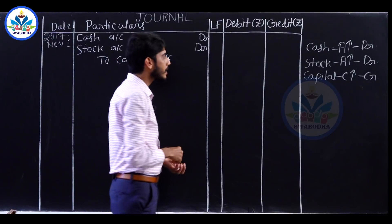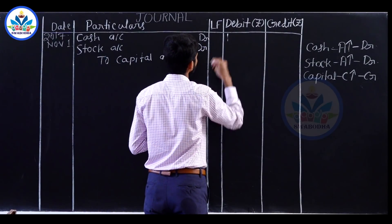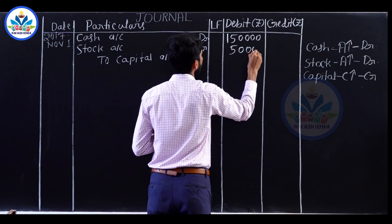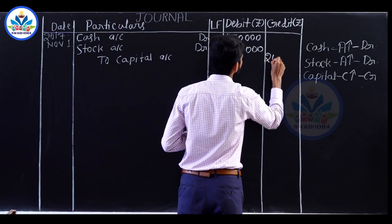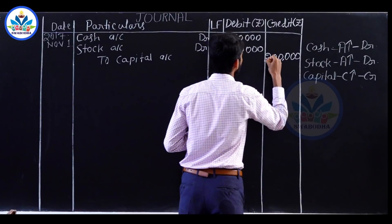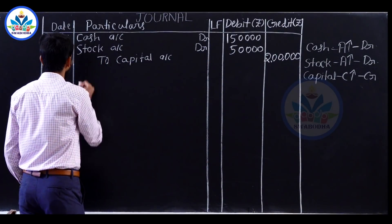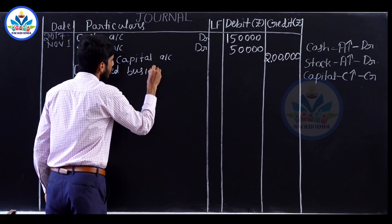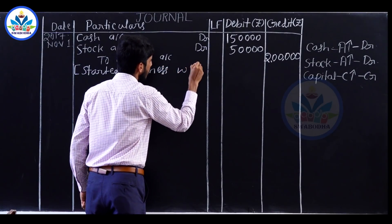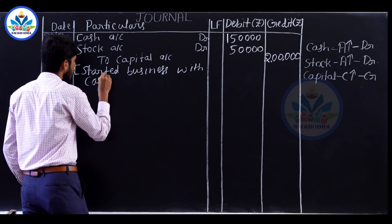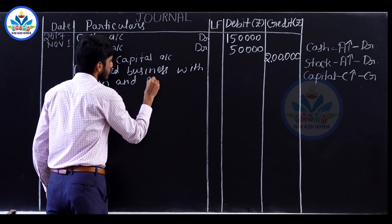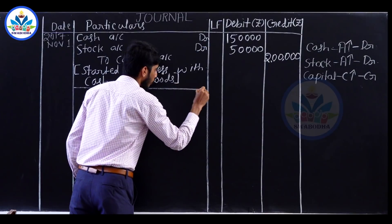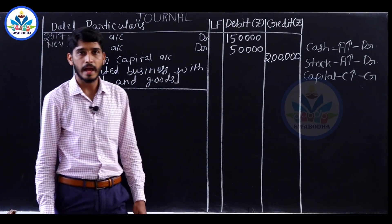Amount of cash invested is ₹1,50,000. Stock or goods is ₹50,000, so the total amount of capital invested is ₹2,00,000. Narration: Started business with cash and goods.